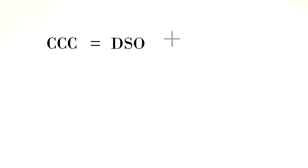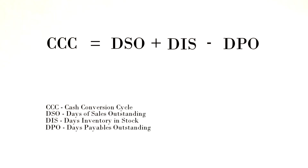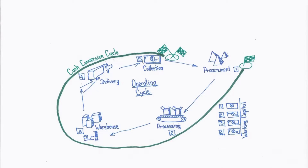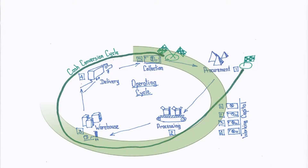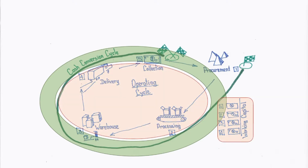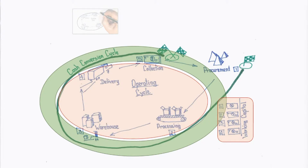The traditional academic formula for determining cash conversion cycle is days sales outstanding plus days inventory in stock less days payables outstanding. We have defined the working capital in previous episodes and also revealed the relationship between the cash conversion cycle and the working capital. At the working capital definition in the management approach episode, we defined working capital as the total amount of money invested in the operating cycle of the company.